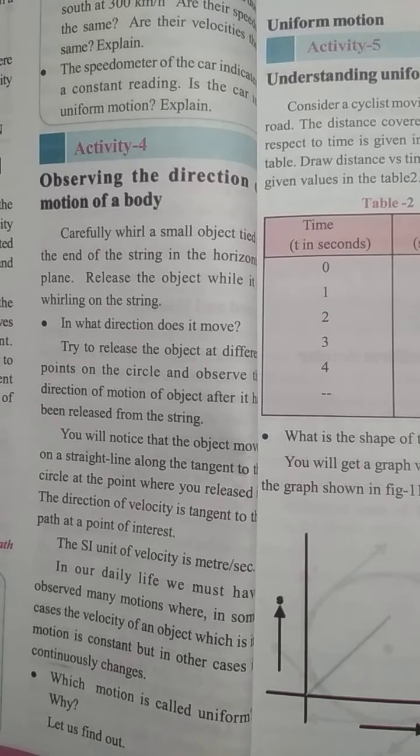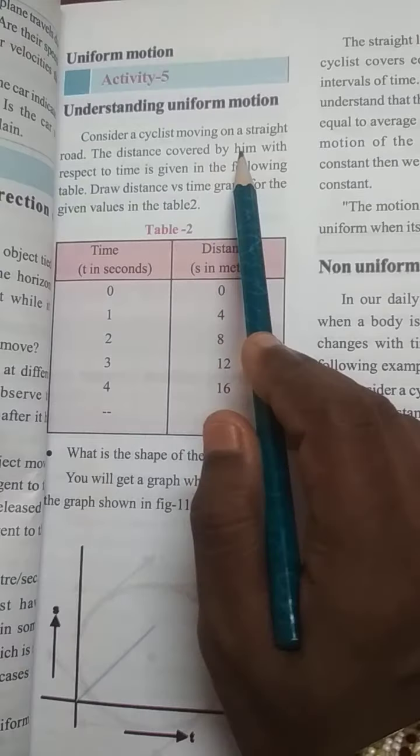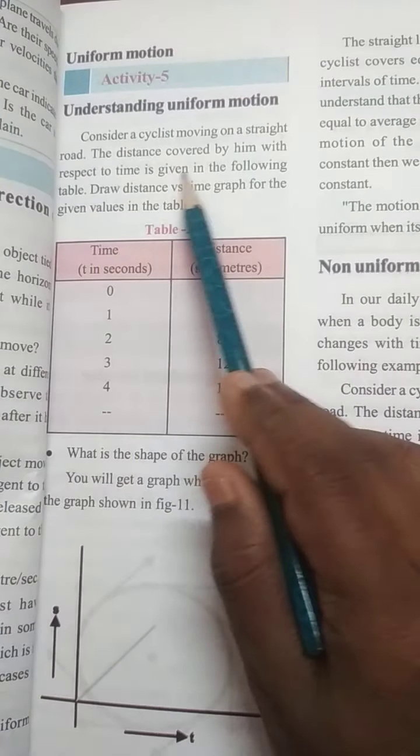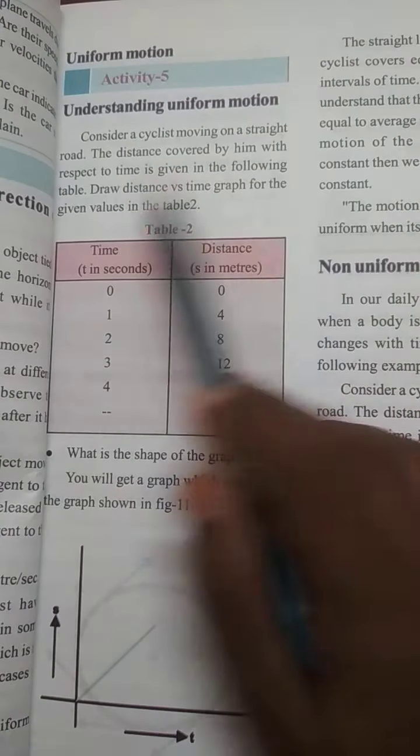Next we will see uniform motion. Understanding uniform motion. Consider a cyclist moving on a straight road. The distance covered by him with respect to time is given in the following table. Draw distance versus time graph for given values.